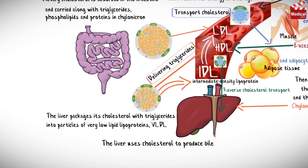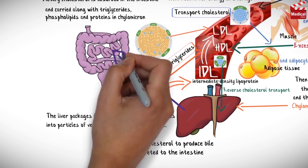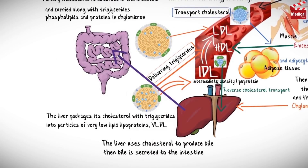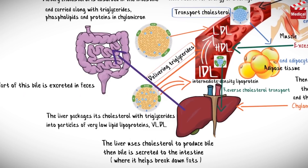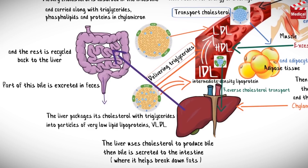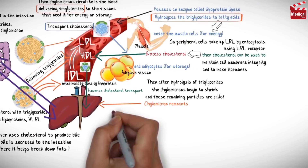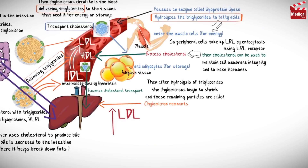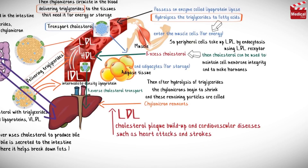Excess cholesterol is delivered to HDL to be returned to the liver in a process called reverse cholesterol transport. The liver uses cholesterol to produce bile, then bile is secreted to the intestine where it helps break down fats. Part of this bile is excreted in feces and the rest is recycled back to the liver. High levels of LDL in the blood are associated with cholesterol plaque buildup and cardiovascular diseases such as heart attacks and strokes.